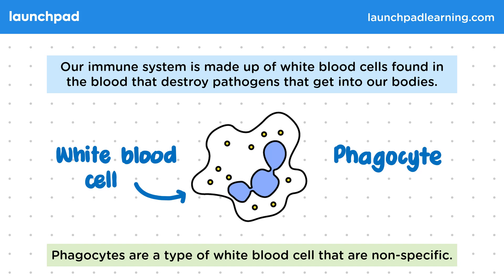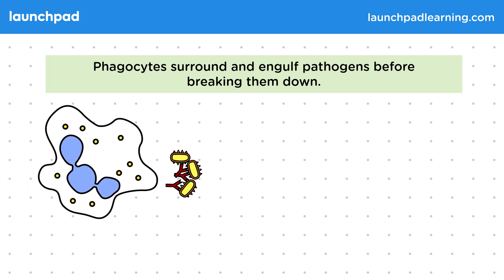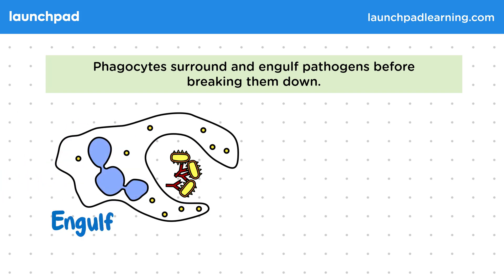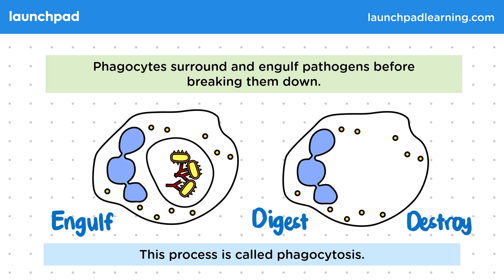Phagocytes surround and engulf pathogens before breaking them down. This diagram shows a pathogen. Phagocytes come along, bind to the pathogen and then engulf them, meaning they take them in. Once the pathogen has been engulfed it gets digested and then destroyed. This process is called phagocytosis. For the exam you should be able to describe phagocytosis simply as involving engulfing, digesting, and destroying pathogens.